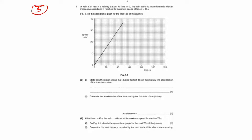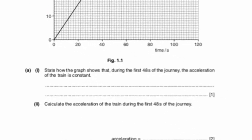A train is at rest in a railway station at time t0. The train starts to move with increasing speed until it reaches its maximum speed at time t equals 48 seconds. A speed-time graph is given. For the first 48 seconds of the journey, we need to state how the graph shows that the acceleration of the train is constant.